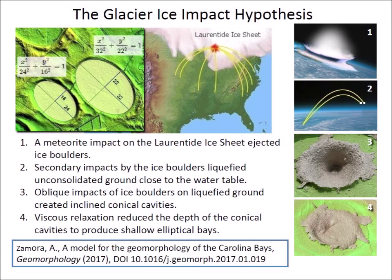The saturation bombardment by pieces of glacier ice provided many opportunities for creating splash chevrons when the ice boulders hit streams and rivers.